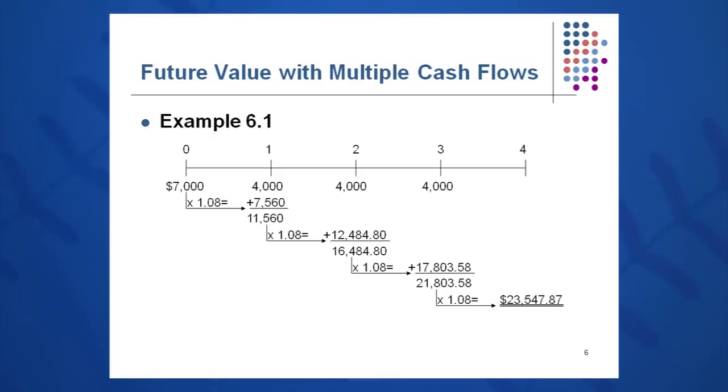So I take the first 7,000, multiply it by 1.08 and get 7560 at the end of year one on that $7,000. I drop down the 4,000. Again, it's going to gain no interest because I put it in there on December 31st. The end of year one, I have 11,560.